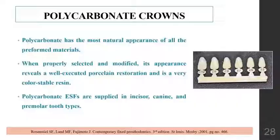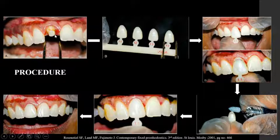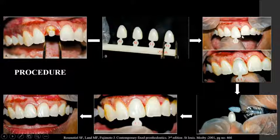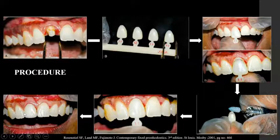Polycarbonate crowns have the most natural appearance of all preformed materials. When properly selected and modified, they reveal a well-executed restoration with very color-stable resin. They are supplied in incisor, canine, and premolar types. For the procedure, the mesiodistal width of the crown is measured with a divider, an appropriately sized shell is selected, and the crown height from the incisal edge is marked as a guide for trimming. After trimming, relining of the polycarbonate crown is done with provisional resin material, followed by temporary cementation.